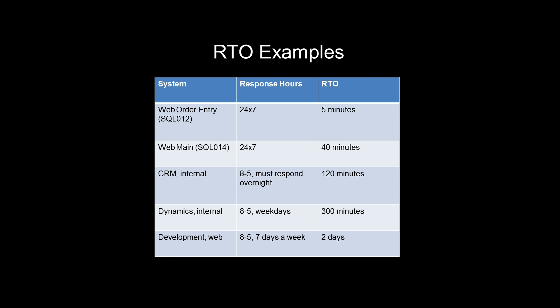Here's a quick example showing various systems with their RTO and response hours. Different systems might have different response hours — for example, a dynamic system at night might not require an immediate response. A CRS system might have 8-to-5 coverage but still respond overnight. For something like a web system, as soon as it goes down you've got five minutes to get it back up, which means you've got to be prepared and ready. There aren't many applications you can restore in five minutes from a full backup, so you've got to be prepared ahead of time.